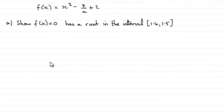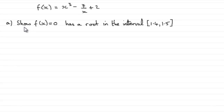In this question, we're given that f of x equals x cubed minus 7 over x plus 2. And for part A, we're asked to show that if f of x equals 0, then there's a root in the interval between 1.4 and 1.5.